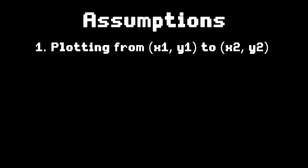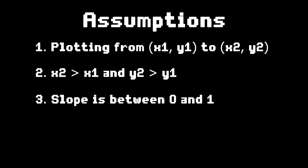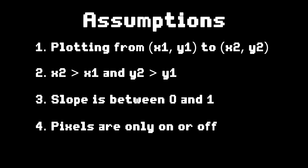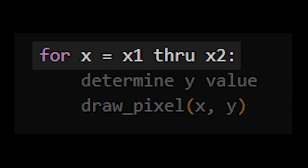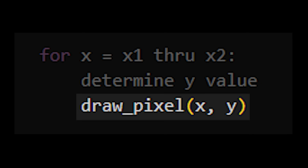To simplify things, let's assume that you're plotting a line from the point x1,y1 to the point x2,y2. The line goes from left to right and bottom to top — or in math terms, x2 is bigger than x1 and y2 is bigger than y1. The slope of the line is between 0 and 1, and we're only dealing with pixels that are on or off, like redstone lamps. At a high level, Bresenham's algorithm looks like this: for every single x value, x1 through x2, figure out the y value that needs to go there, and then draw the pixel.